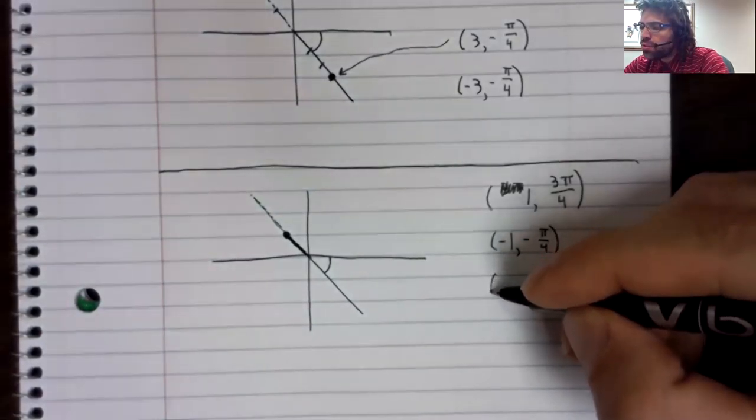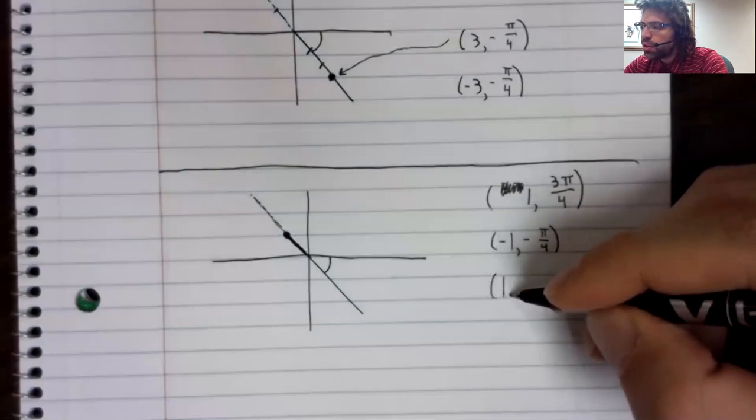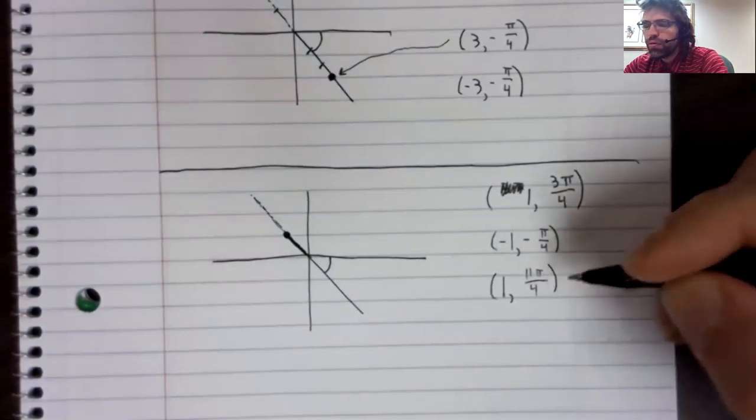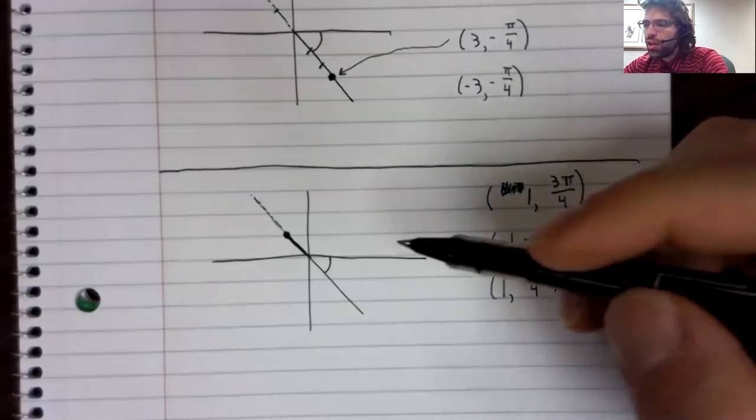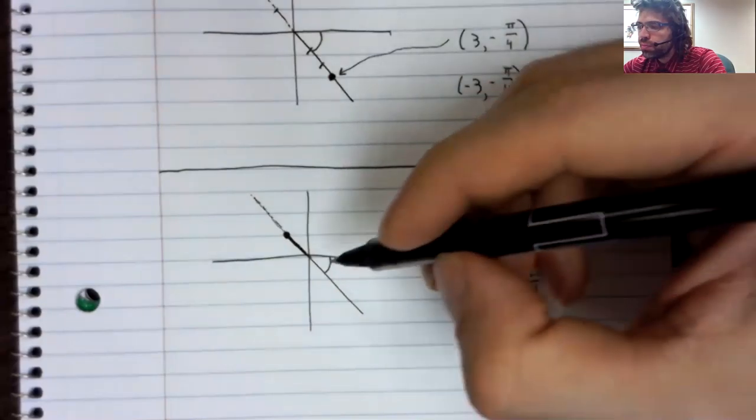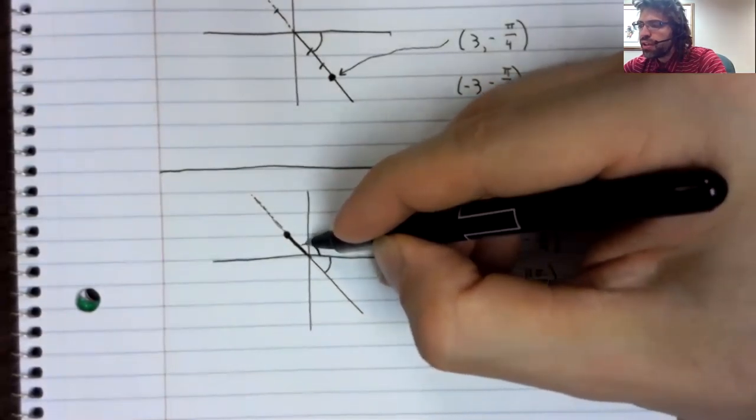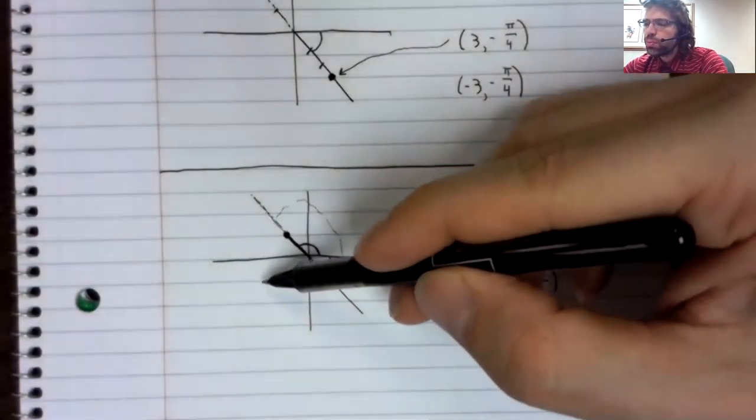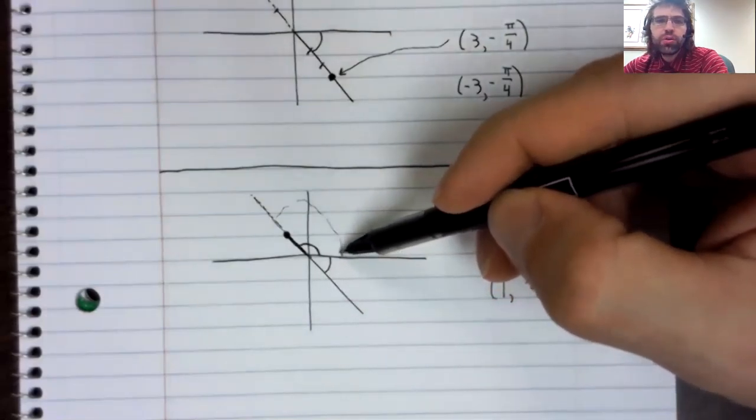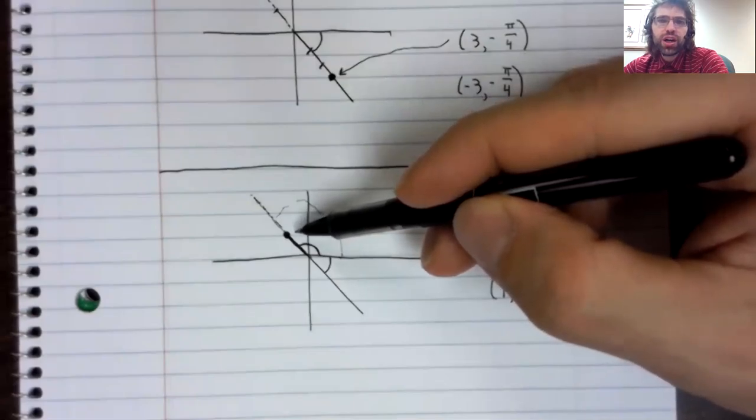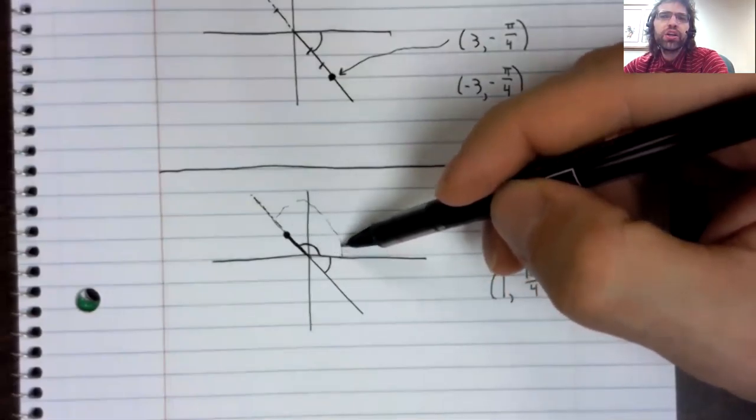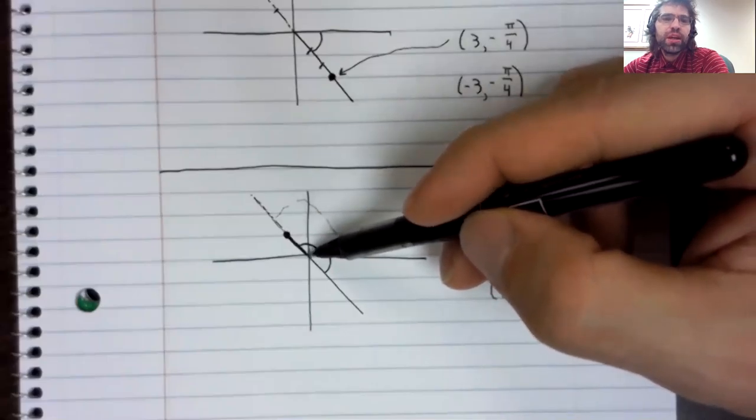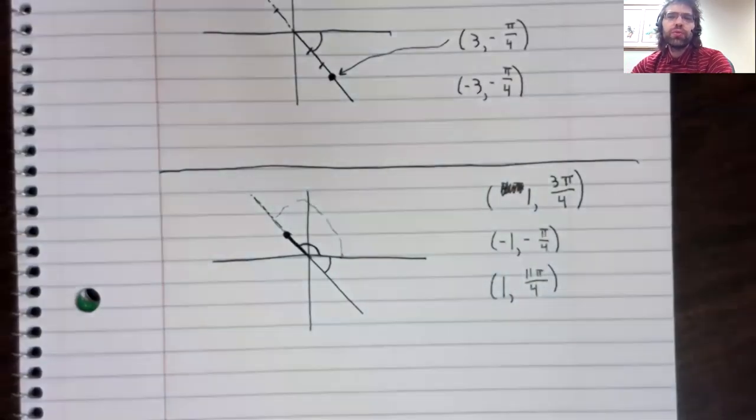Likewise, this point is 1, 11 pi over 4. 11 pi over 4 brings us here. 8 pi over 4 is once around the unit circle, followed by another 3 pi over 4 to bring us here. And then we count one unit up.